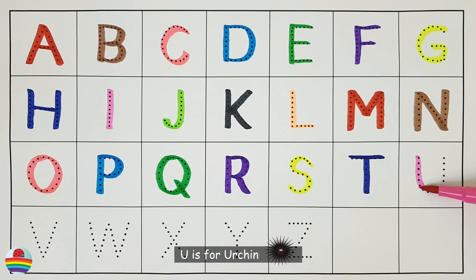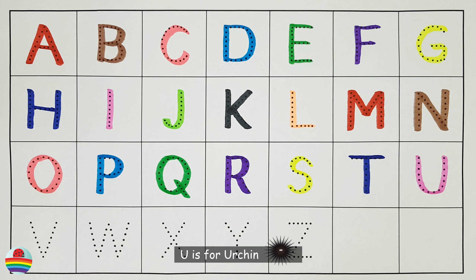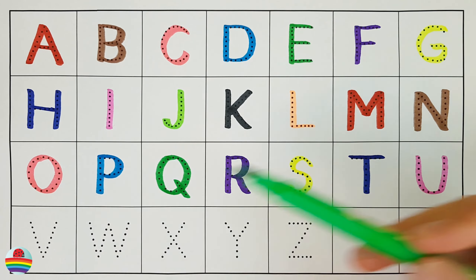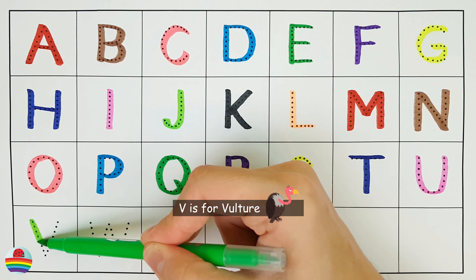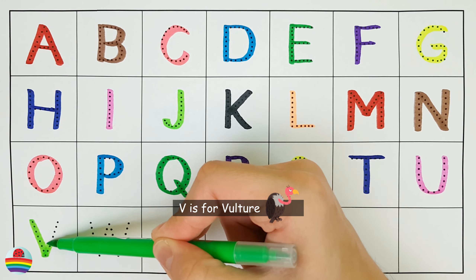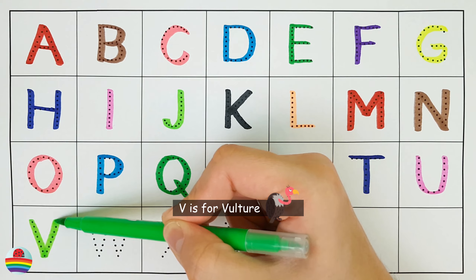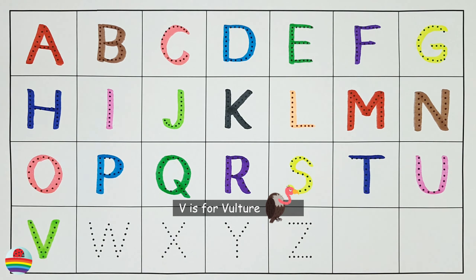U. U is for Urchin. V. V is for Vulture.